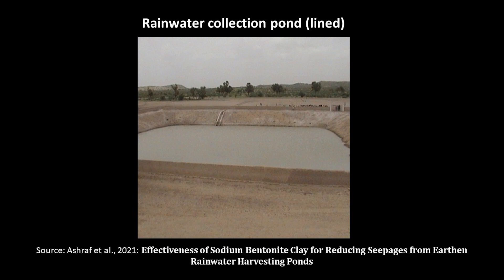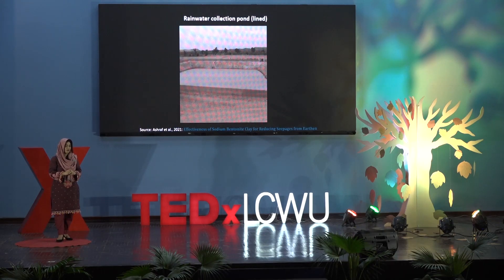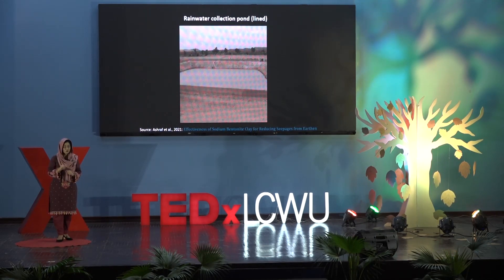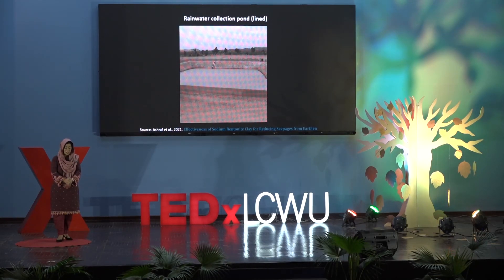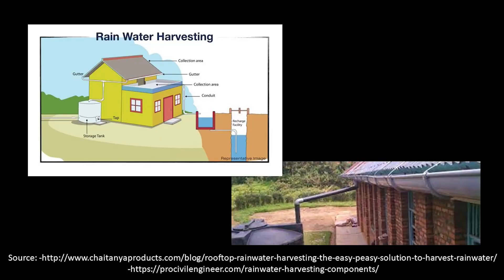Such natural depressions can be lined with a mixture of bentonite, chopped wheat straw, and sandy loam soil, which, according to a recent study, has been identified as the most suitable mixture for pond lining in the drylands of Pakistan. Such lining can minimize seepage loss, and the water harvested in these ponds can later be used for domestic, livestock, and even small-scale farming purposes.